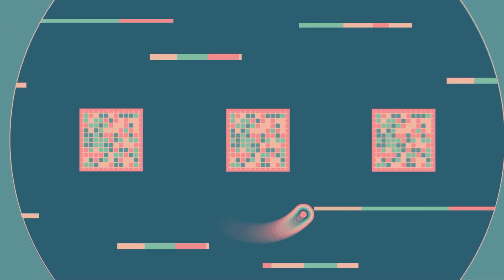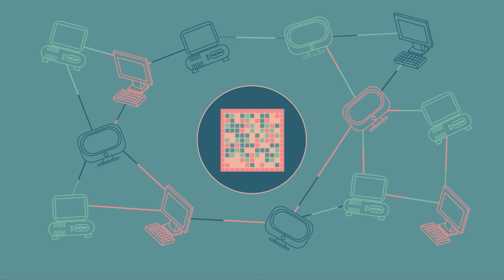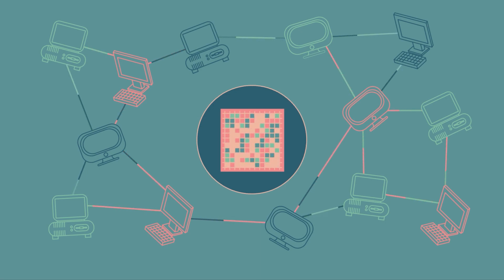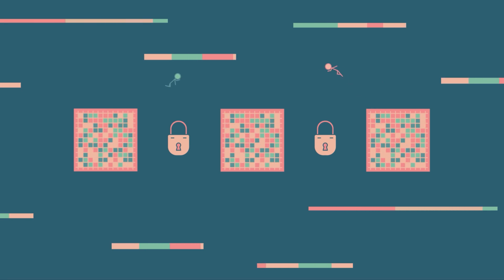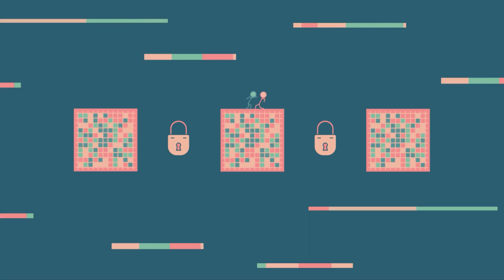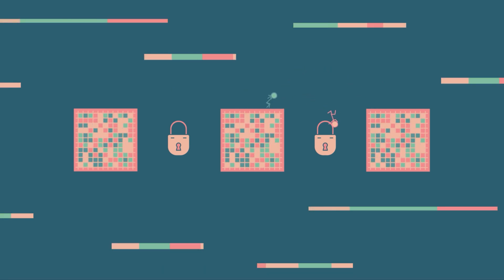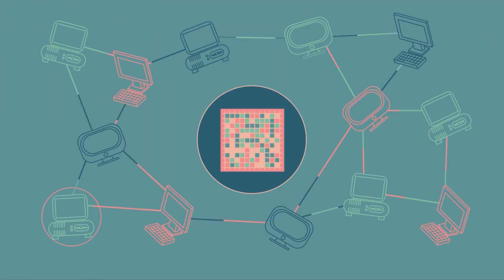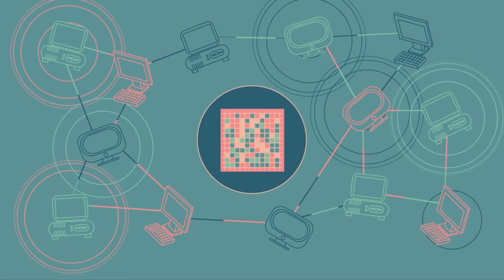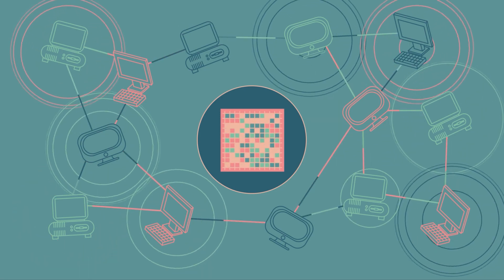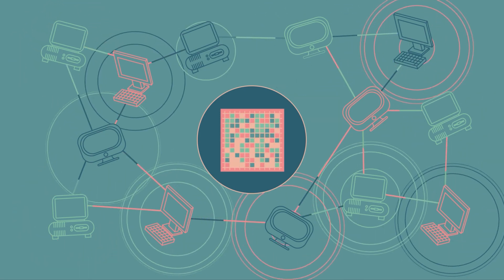A blockchain is a database shared across a network of computers. Once the database records information, it can't be changed. The network constantly checks to ensure all the copies of the database are the same.